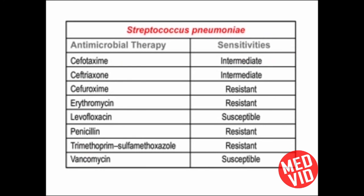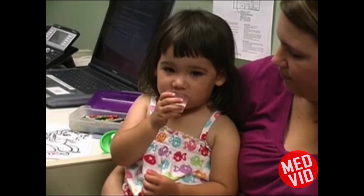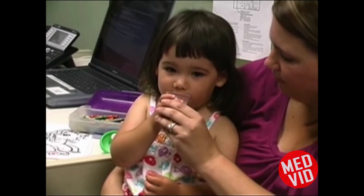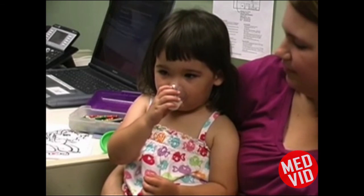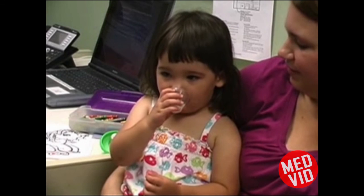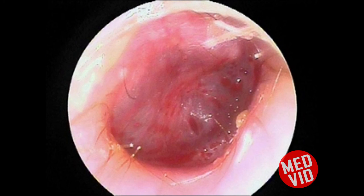Gram staining of the middle ear specimen, as well as the susceptibility pattern of the organisms isolated, should be used to guide antimicrobial therapy. The small tympanic membrane perforation made during tympanocentesis usually heals in approximately two to three days, and some serosanguinous drainage during this period is normal.